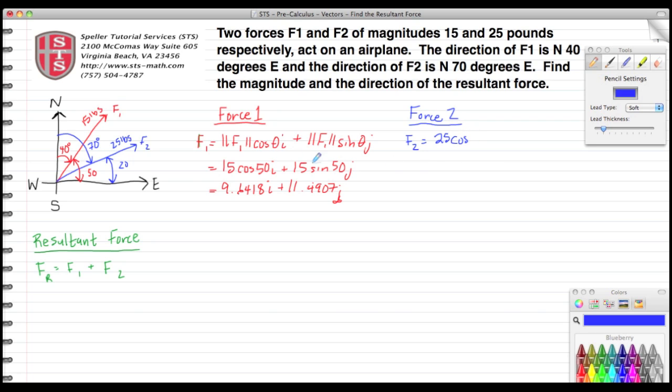Cosine—we just said the angle was 20 degrees—i, plus again 25 sine 20 j. When we evaluate, we know that the i component comes out or evaluates to 23.4923 i, and the j component evaluates to 8.555 j.